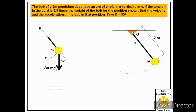g is the acceleration due to gravity, and this normal direction makes 30 degrees with the vertical, which means the weight also makes 30 degrees with the normal. The second force to represent in the free body is the tension in the cable, acting towards the center, labeled as T. It is mentioned that tension is 2.5 times the weight of the bob, so T equals 2.5 mg.